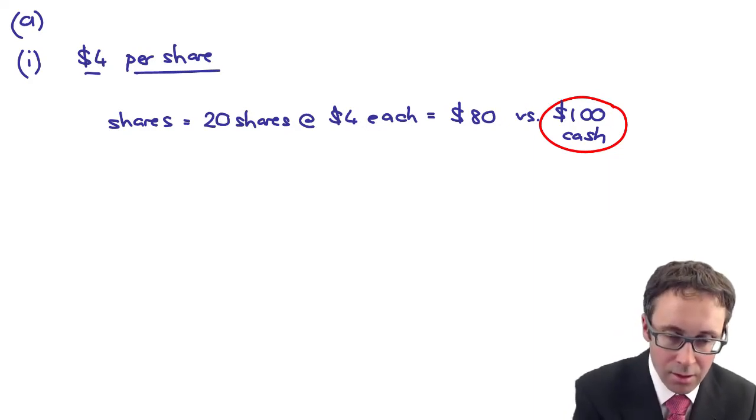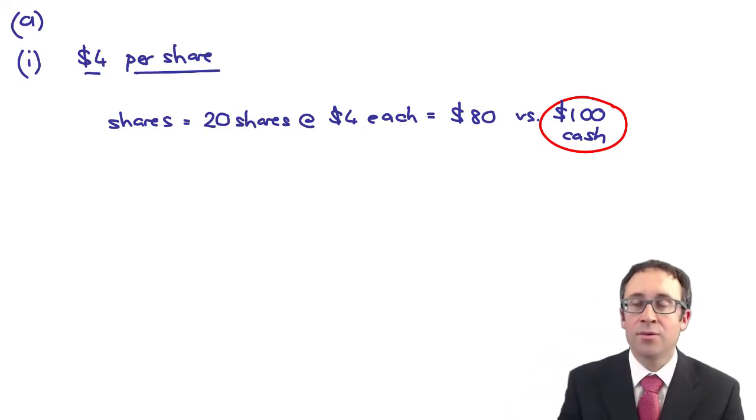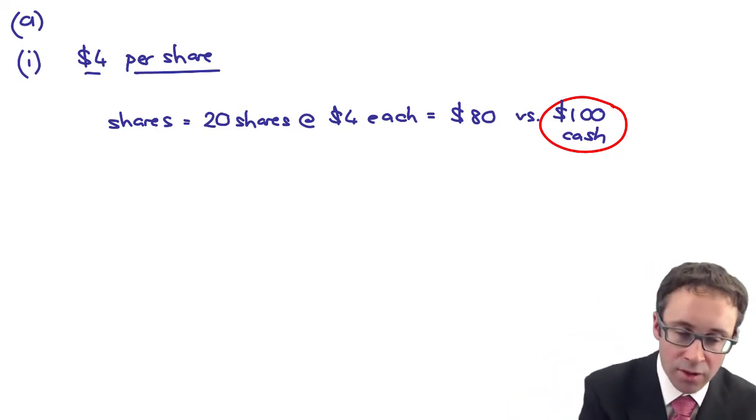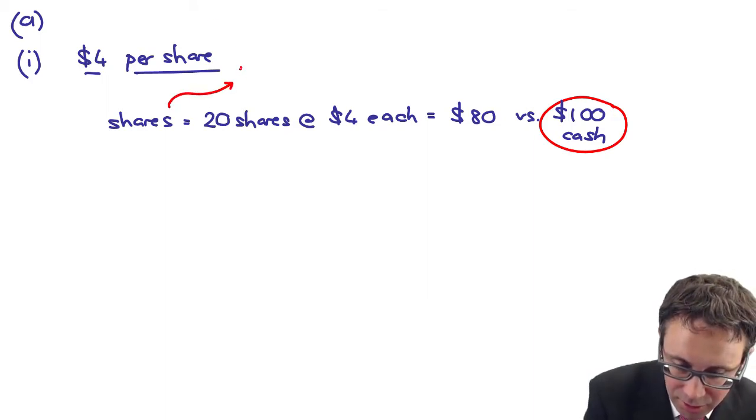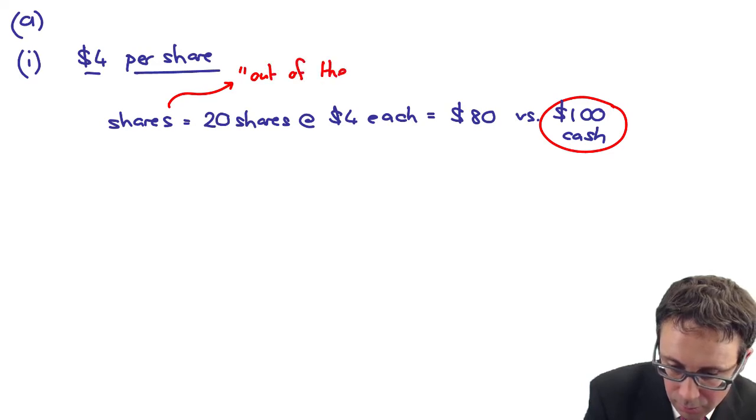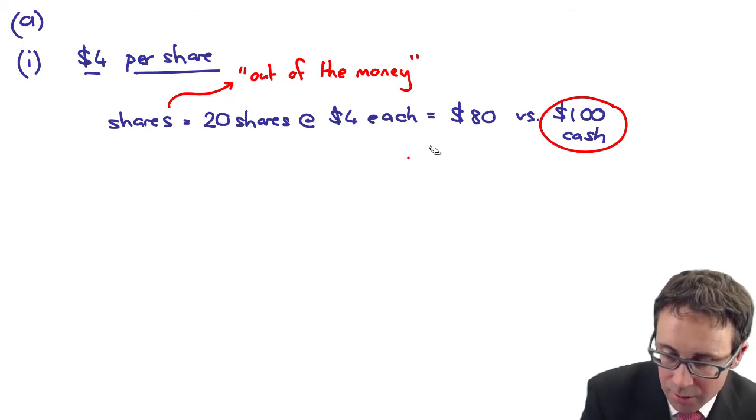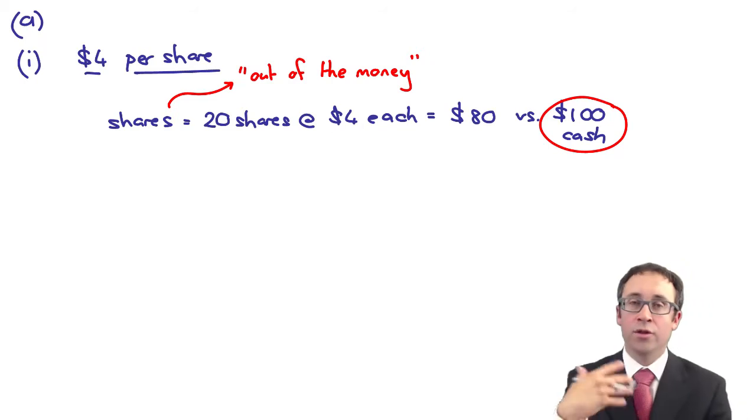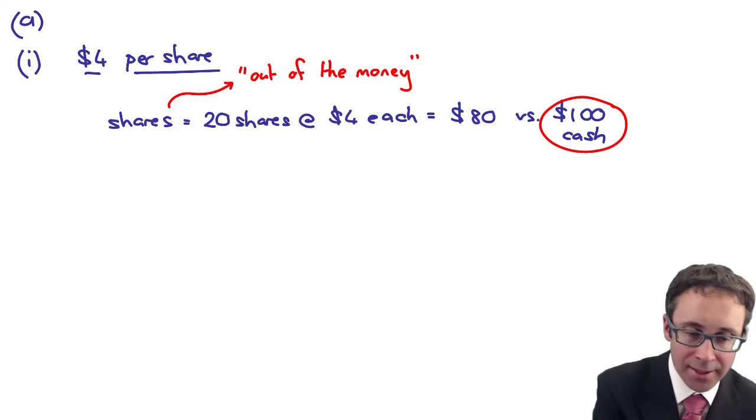It's worth a lot more. So the share price got to $4 per share. You would take the cash. You would not take the shares. So therefore, what you could say is that the debentures are out of the money, because you are not going to convert them for the shares because the cash is worth more. The shares are worth less.